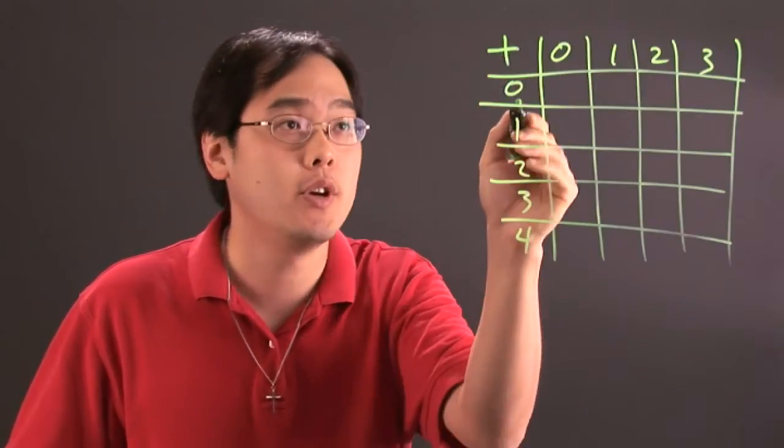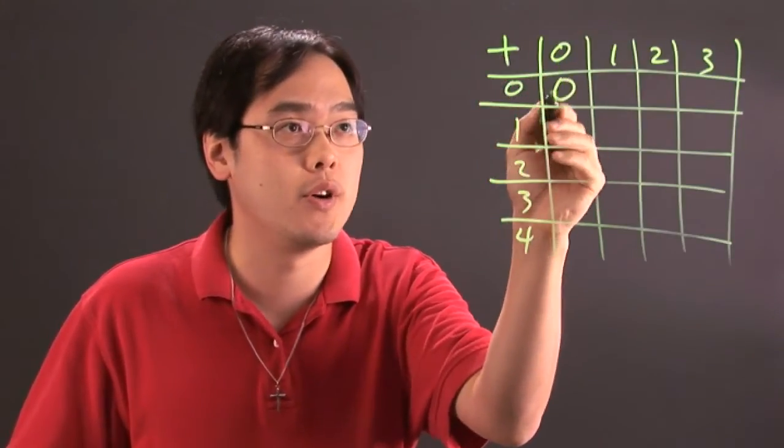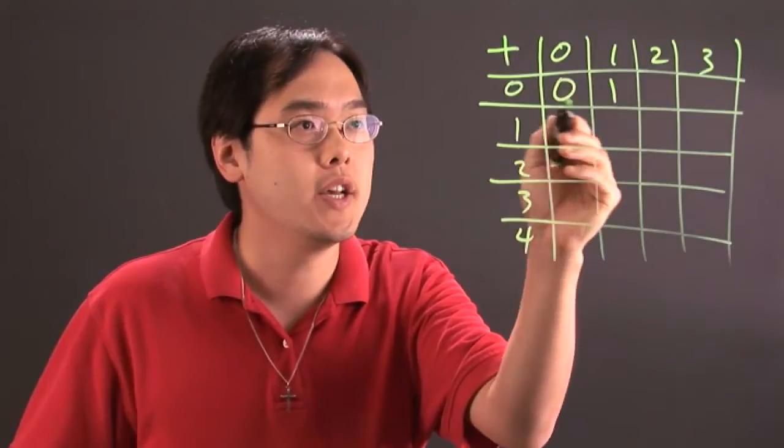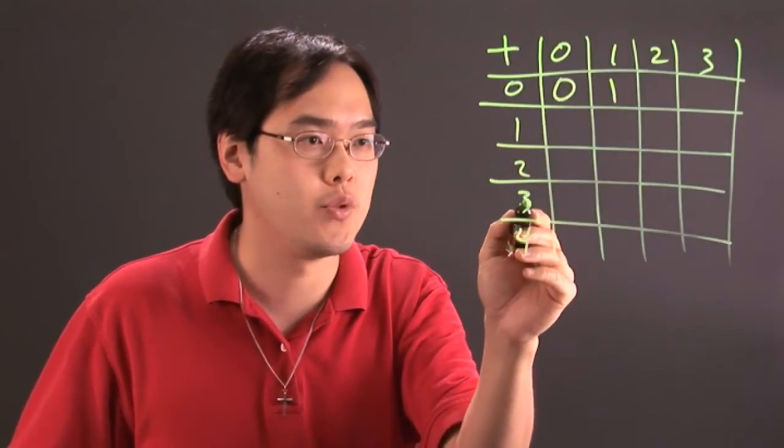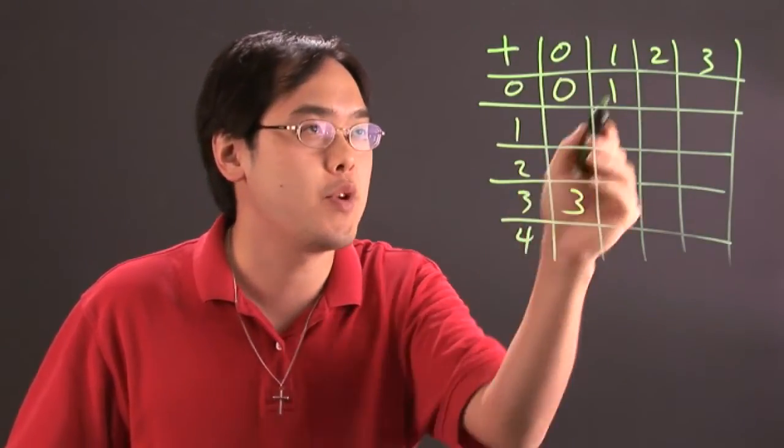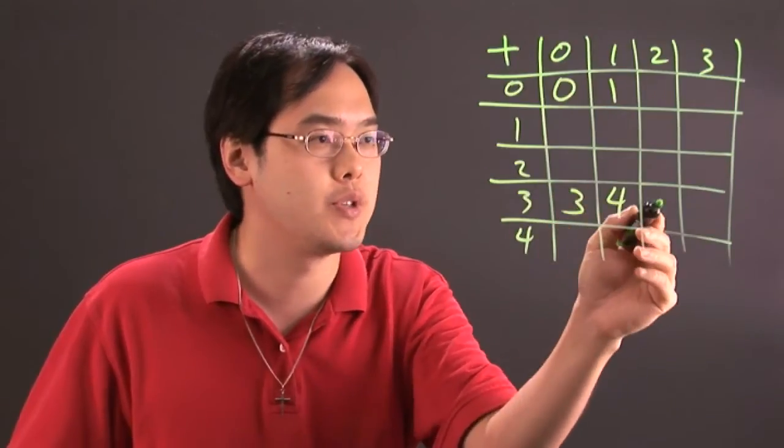For example, since it's an addition table, you do 0 plus 0 which is 0, 0 plus 1 is 1, so on and so forth. And if you want to do 3 plus 0 is 3, 3 plus 1 is 4, 3 plus 2 is 5, etc. and then go from there.